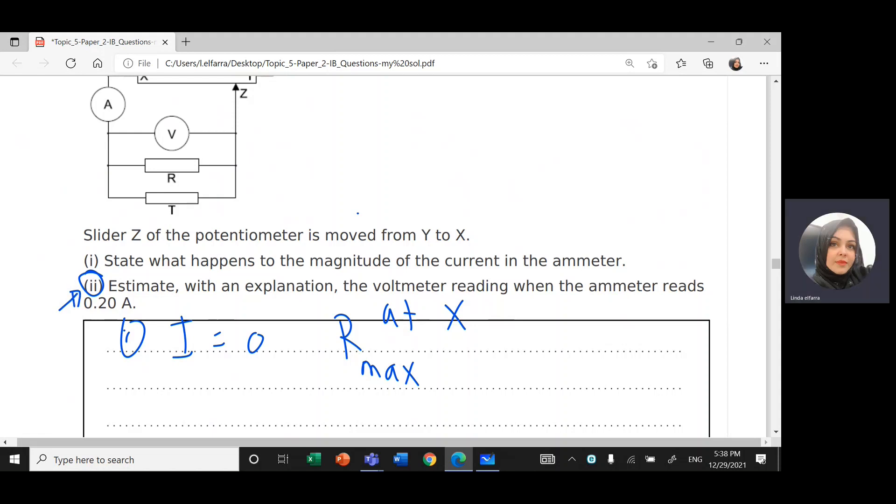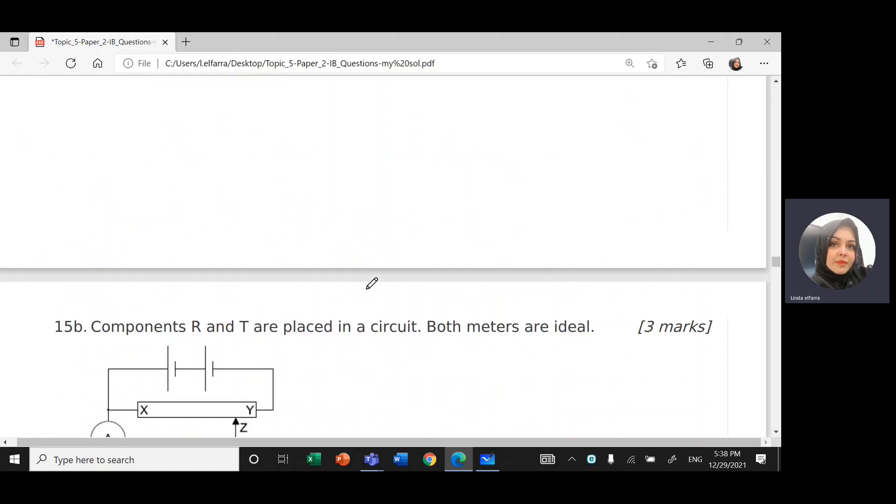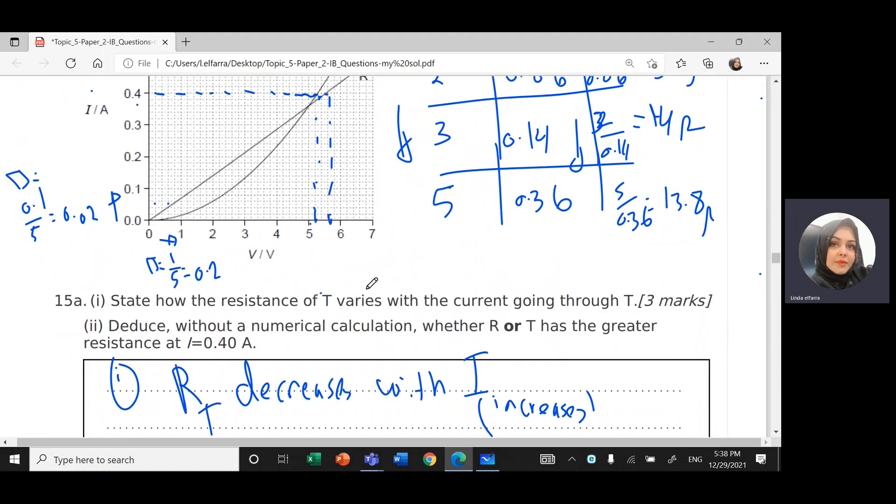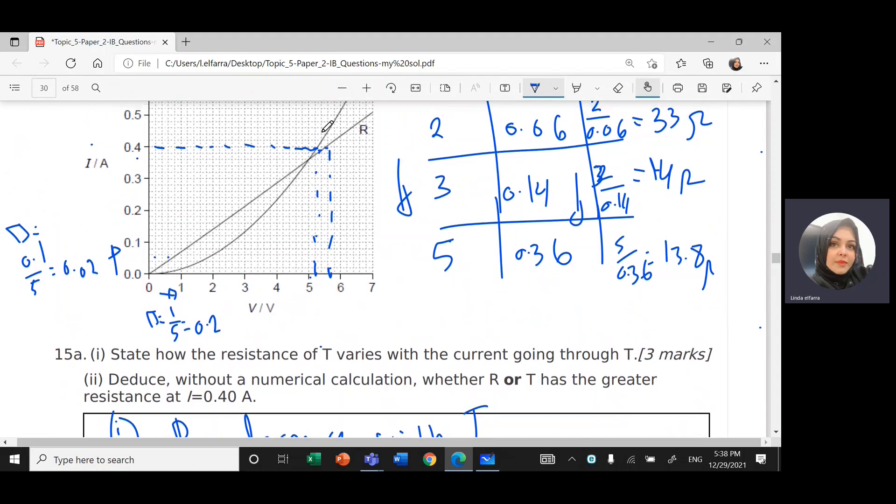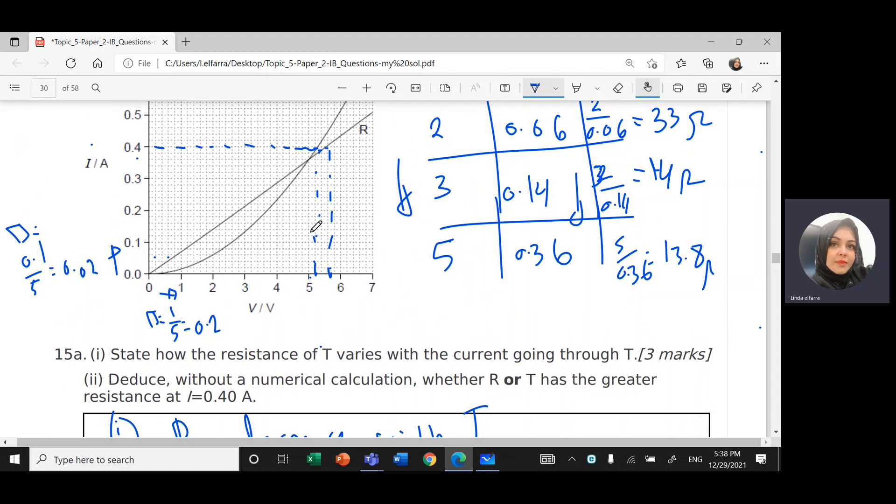Estimate with an explanation, the voltmeter reading when the meter reads 0.2 amp. Many students, they will go to 0.2 amp and they will read the value of the voltage. But remember R and T, they're different resistance. One is ohmic, obeys Ohm's law and the other one doesn't obey Ohm's law. So how I'm going to calculate this, how I'm going to solve this question.